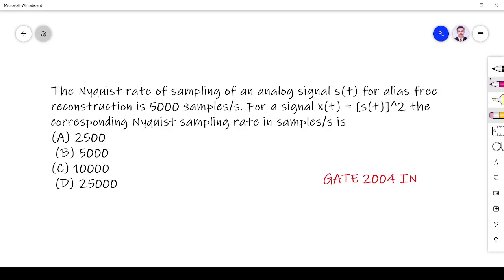The question is: The Nyquist rate of sampling of an analog signal s(t) for alias-free reconstruction is 5,000 samples per second. For a signal s(t), the Nyquist rate is 5,000 samples per second.